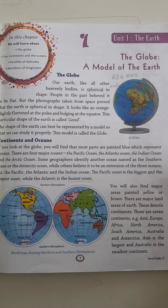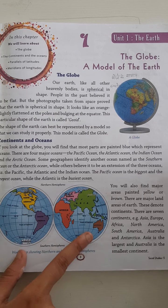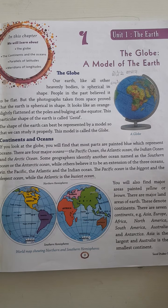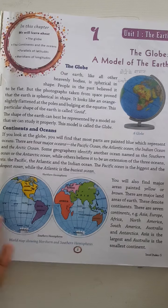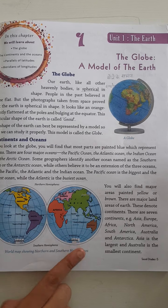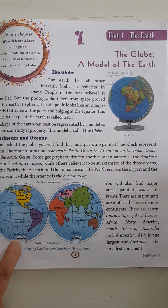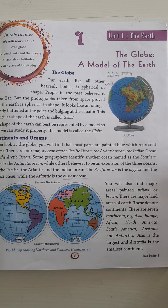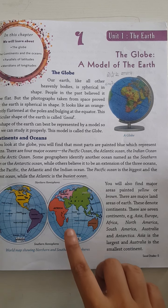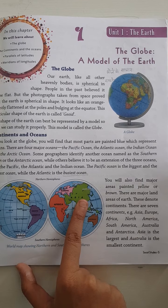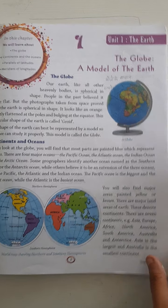You will also find major areas painted yellow or brown — also red, green, purple, and pink. These colors represent major land areas of the earth. The blue part is the water area and the colored part is the land area — these are the continents. The earth has seven continents: Asia, Europe, Africa, North America, South America, Antarctica, and Australia. Asia is the biggest continent and Australia is the smallest. You can see in the image the larger area of Asia and the lesser area of Australia.